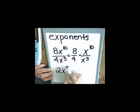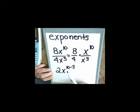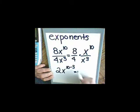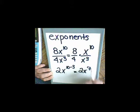So I'm going to have x to the 10 minus 3. It's always the top minus the bottom. 10 minus 3 is 7, so my answer is 2x to the 7th.